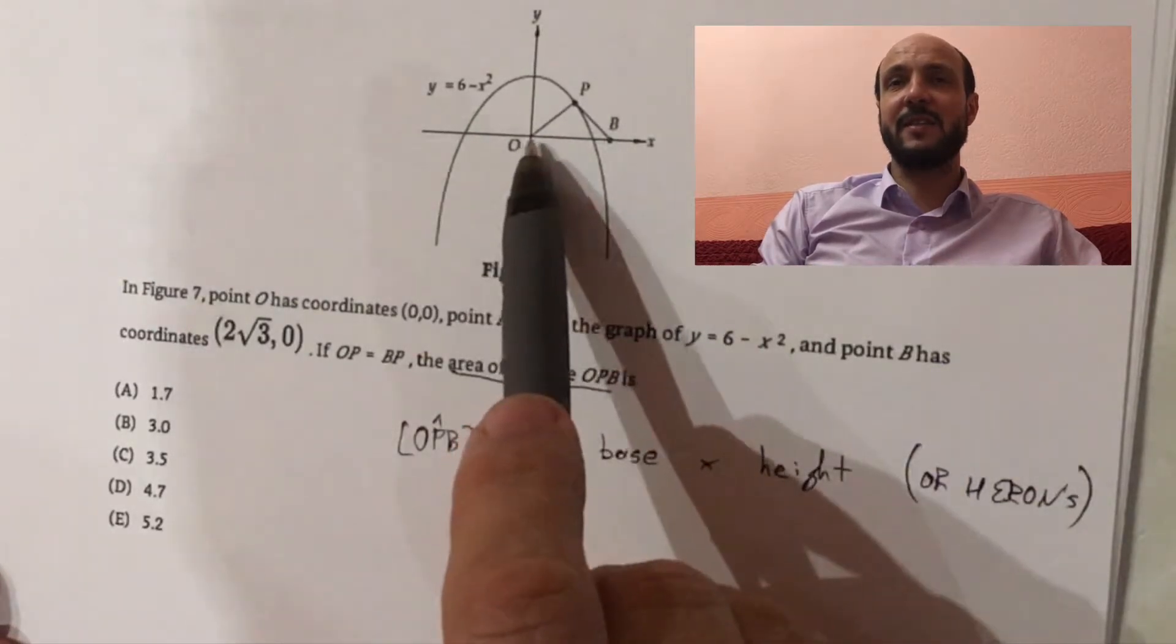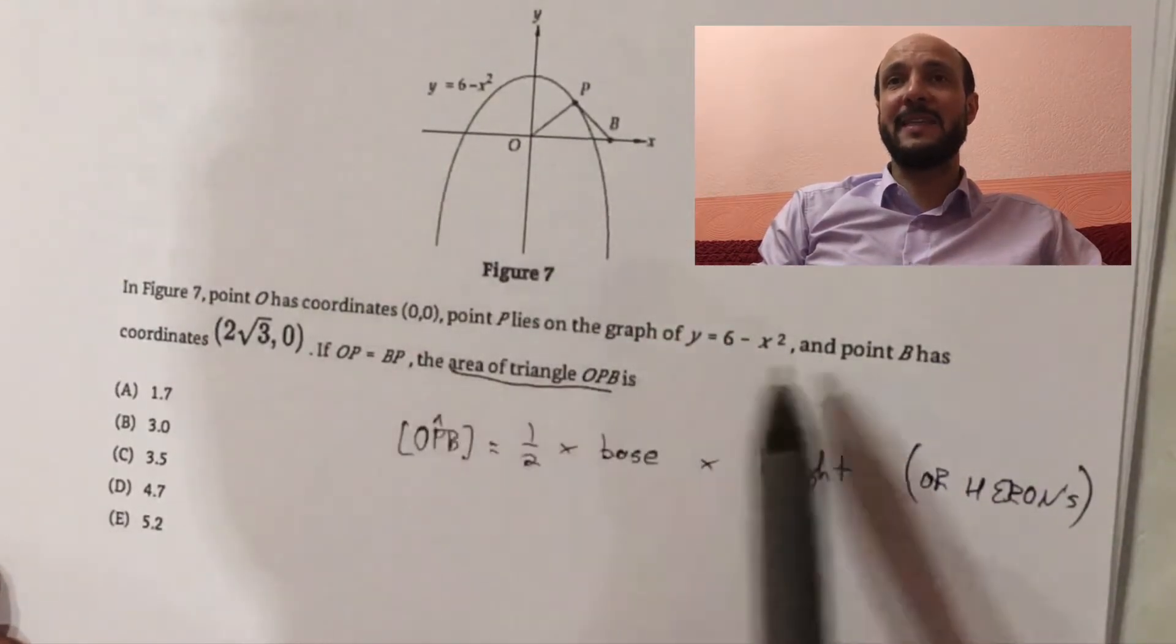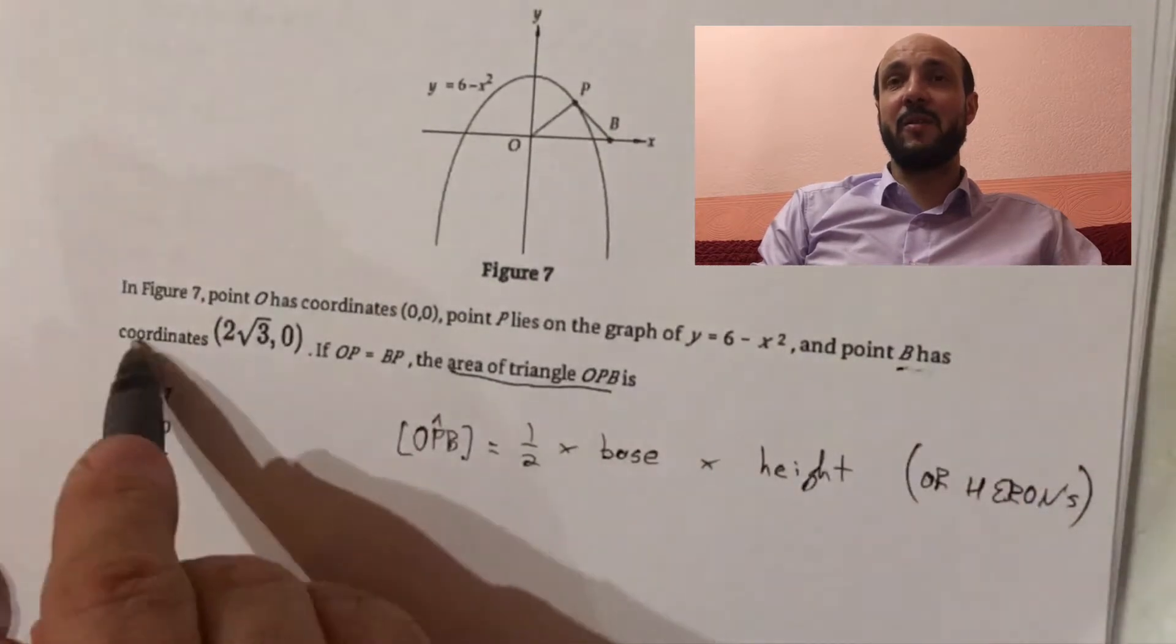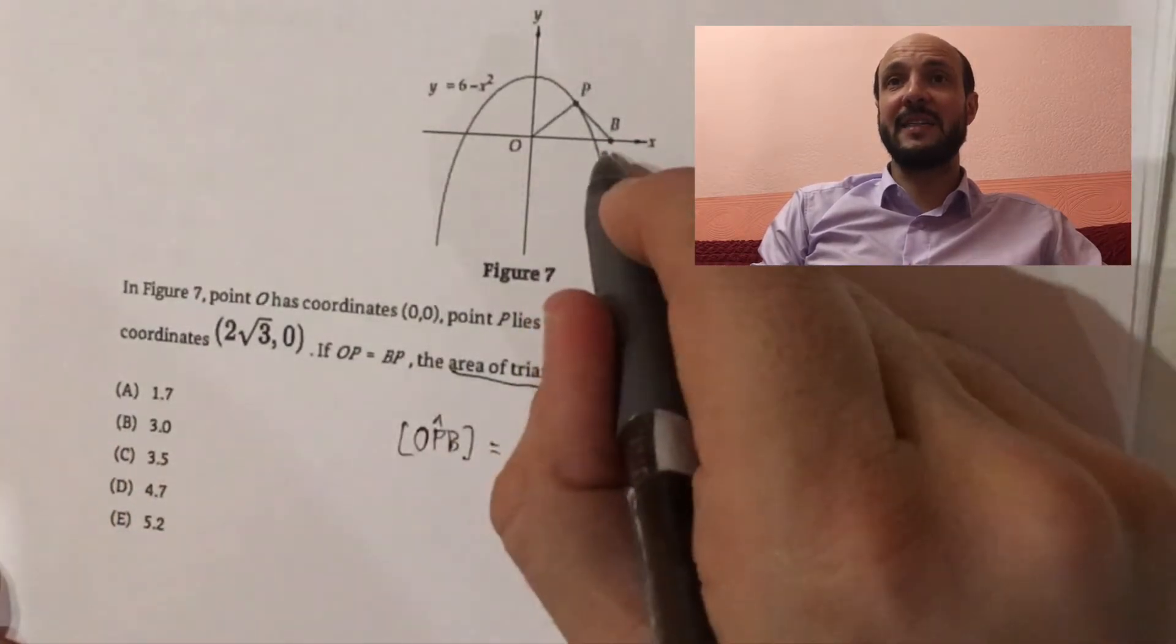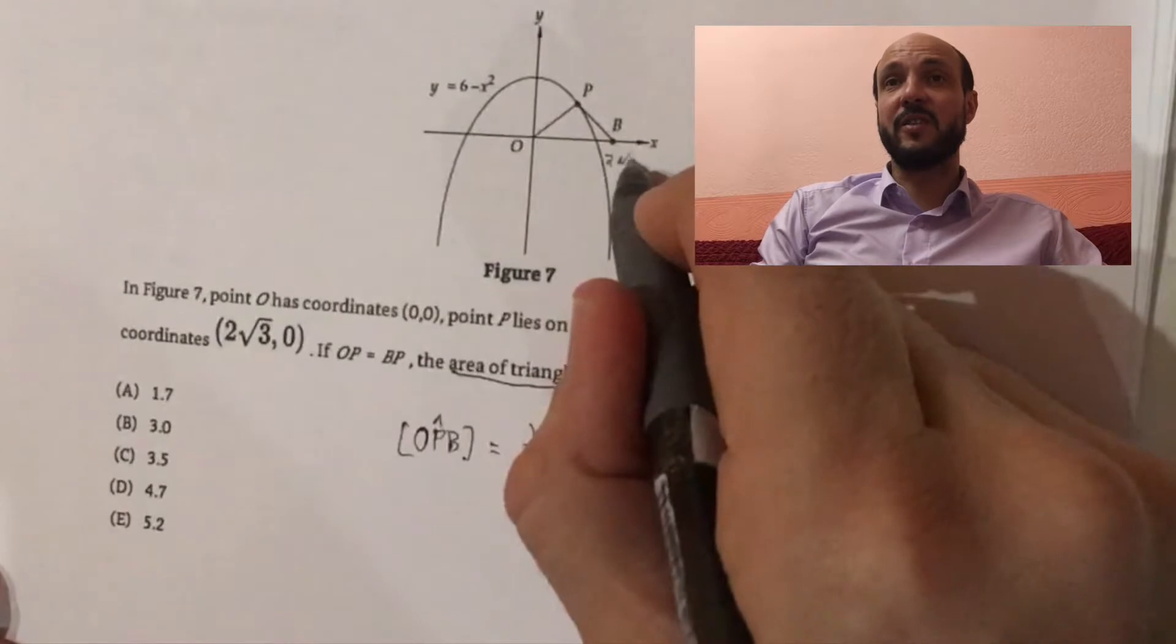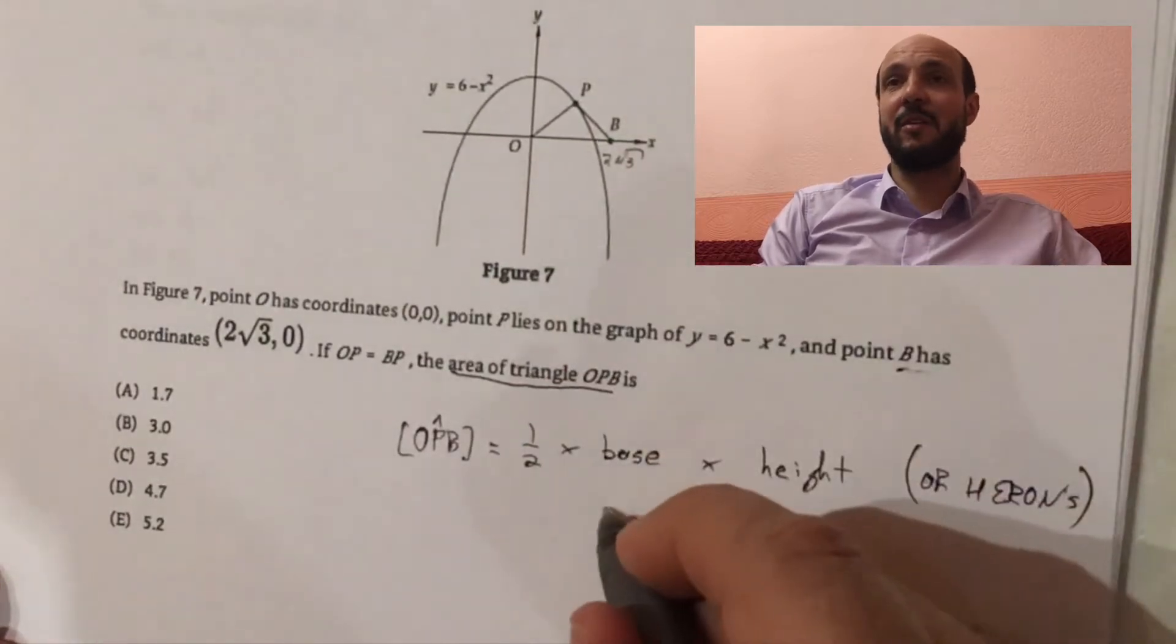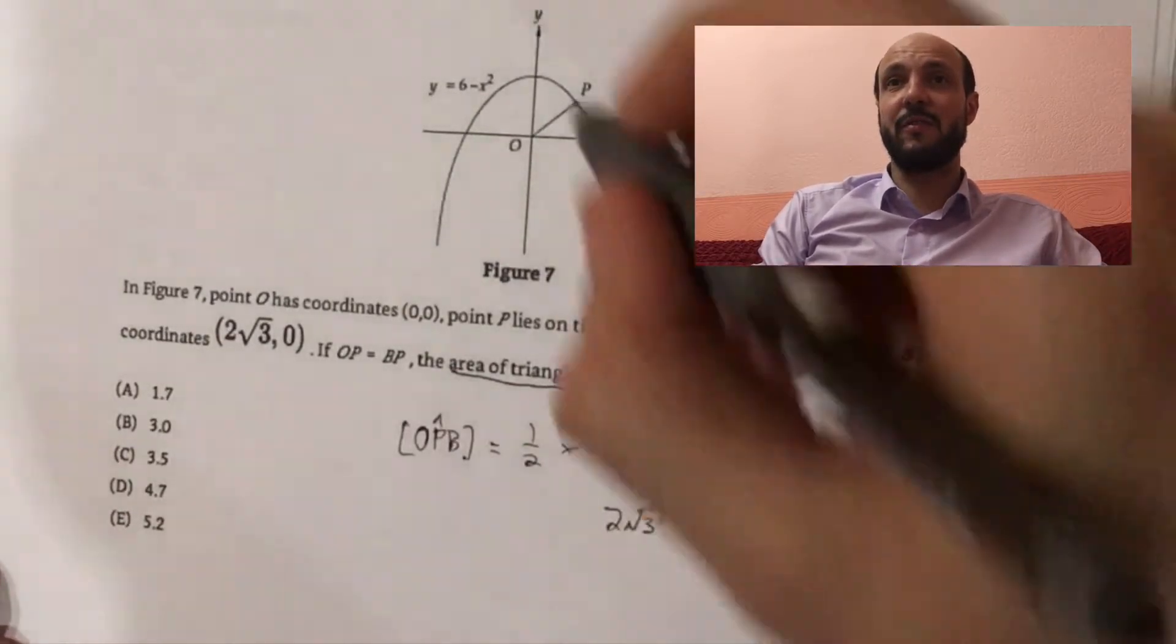So what's the base of our triangle? The triangle's OPB, the base here is OB, and we're told the coordinates of B. B has x-coordinate 2 root 3, so we know the length of the base. It goes from 0 to 2 root 3, so it has a length of 2 root 3.